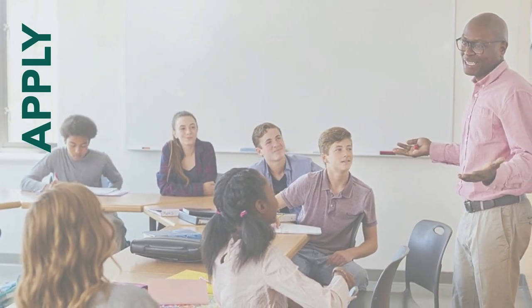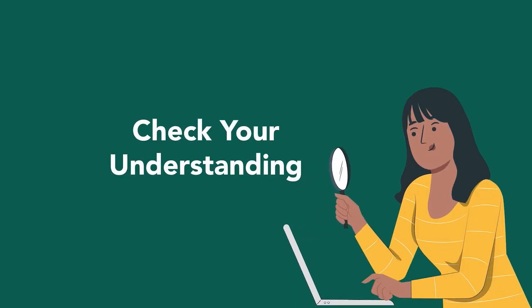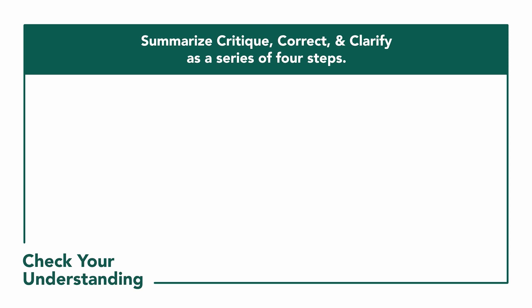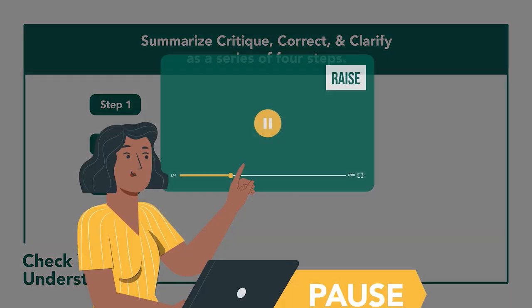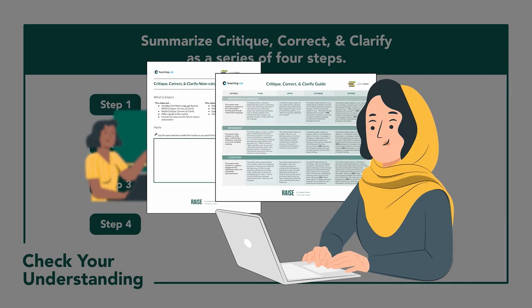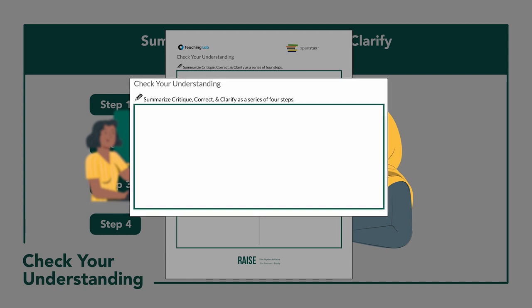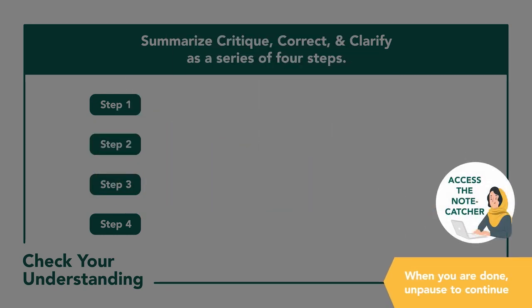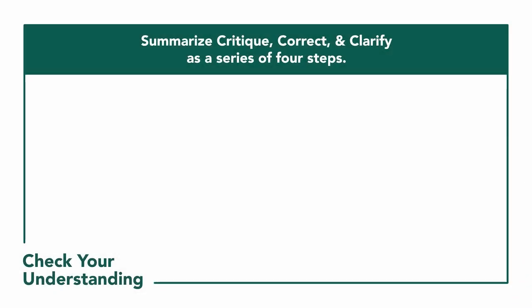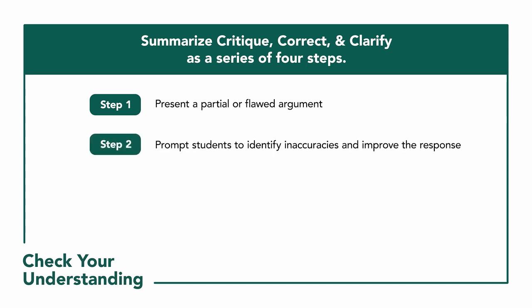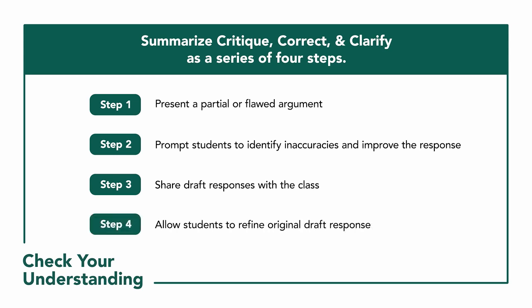You experienced one way to apply Critique, Correct, and Clarify. Check your understanding of the routine with a few questions. Summarize the routine as a series of four steps — pause the video to give yourself time to think and access your note catcher. Be the teacher who applies this routine using the following steps: first, present a partial or flawed argument, explanation, or solution method from a problem; next, prompt your students to identify any inconsistencies, inaccuracies, and or errors, and critique the reasoning and write a draft improved response; then allow your students to share out their draft improved responses with the whole class; finally, allow for your students to refine their original draft responses.